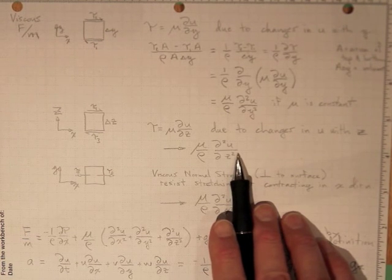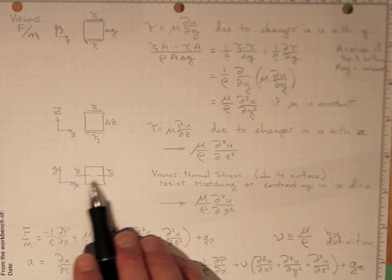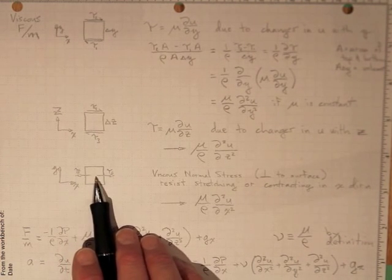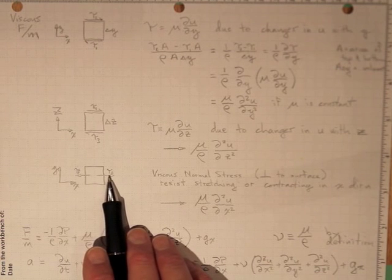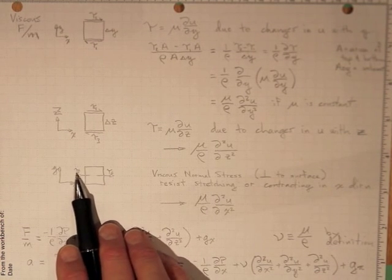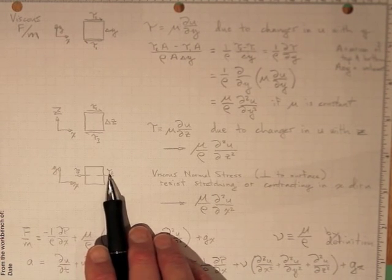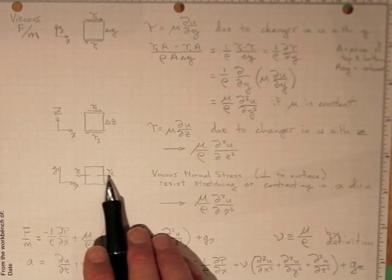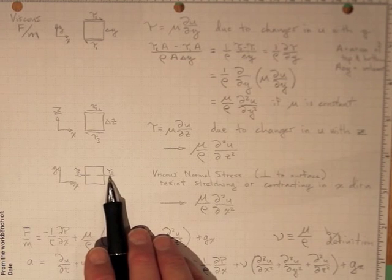Now if we go back to the xy direction and look at the stresses acting on these faces due to the fact that the flow is stretching, we can have tau 5 and tau 6. These are viscous normal stresses, they're perpendicular to the surface,